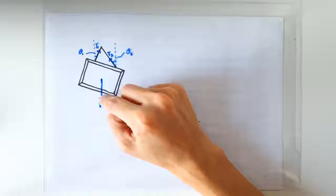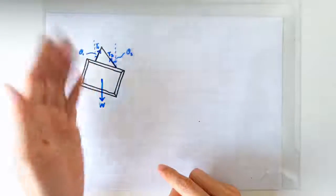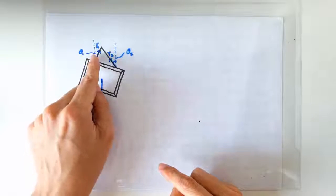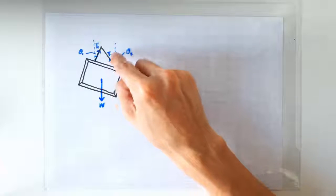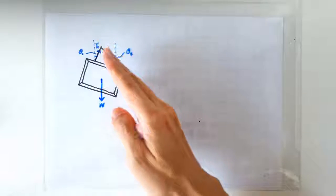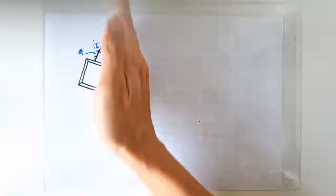There's the downward weight. There's the tension T1 on the left section of the string, making an angle of theta 1 with the vertical. And let's call the tension in the right section of the string T2. And this tension is of course acting along the string, making an angle of theta 2 with the vertical.